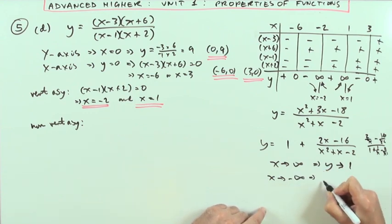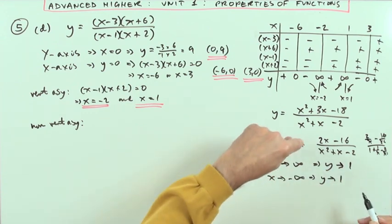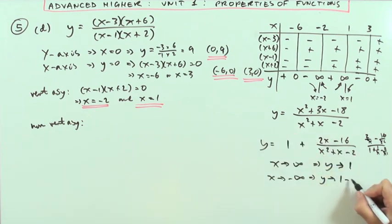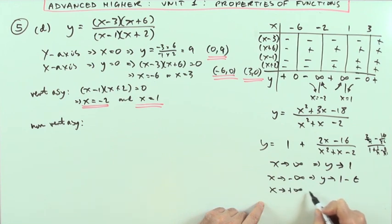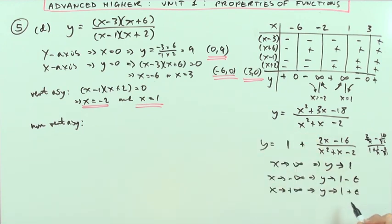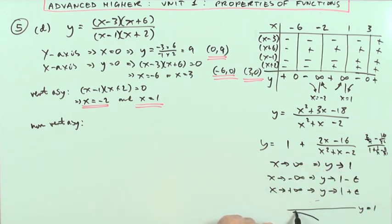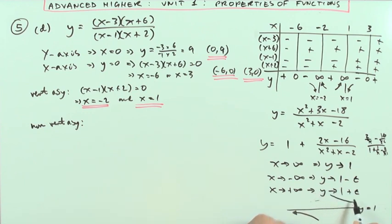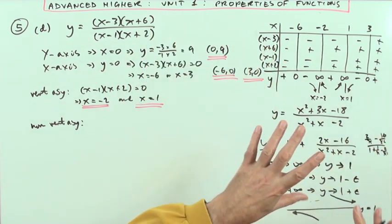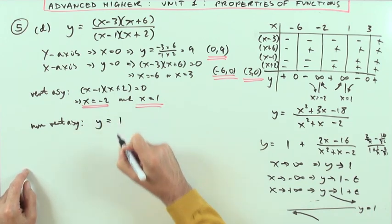How does the graph approach that asymptote y equals 1? As x tends to negative infinity, the bottom is positive (dominant x squared term) but the top remainder is negative, so y approaches 1 from below — it's 1 minus a little bit. As x tends to positive infinity, everything is positive, so y approaches 1 from above — it's 1 plus a little bit that gets smaller and smaller. So I've got my y equals 1 asymptote with the curve approaching from below on the left and from above on the right.